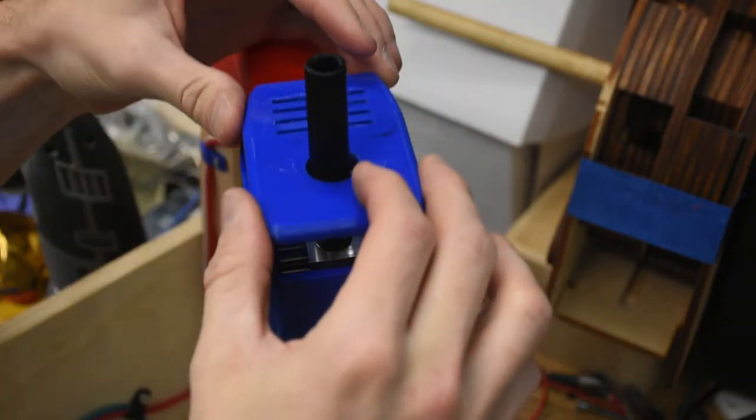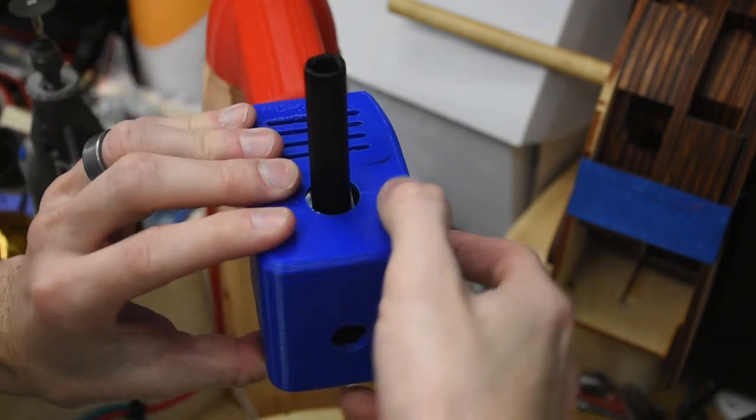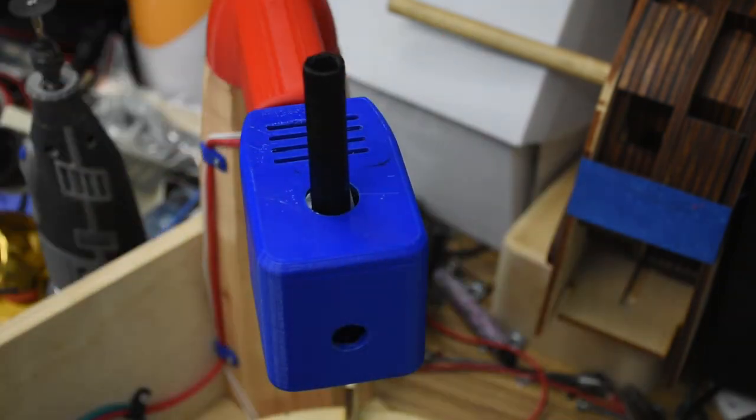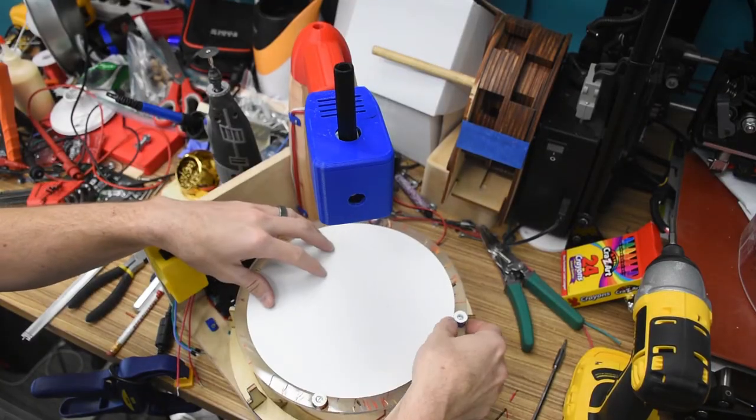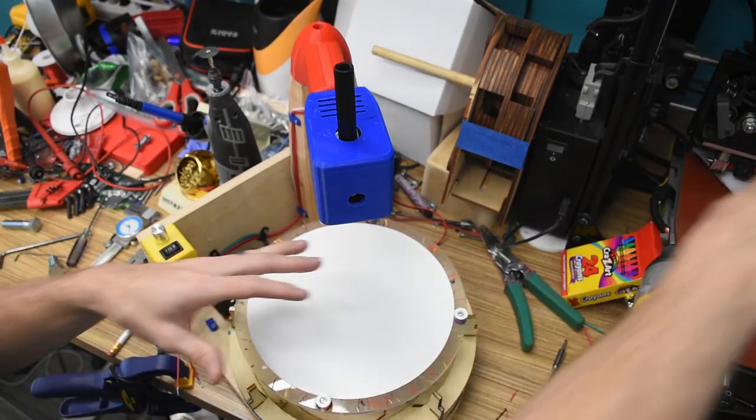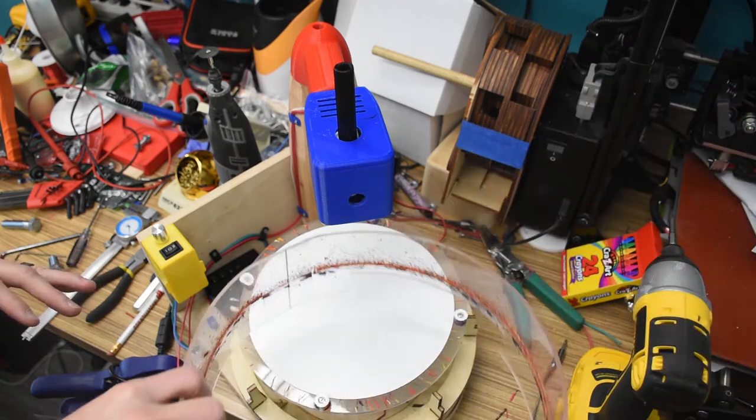Now the top pops on just like so. Vents in the bottom and top allow for natural convection cooling. And then the paper goes in between these little lugs in the edge of the spin table. And they're drafted two degrees outward so that the paper stays put.